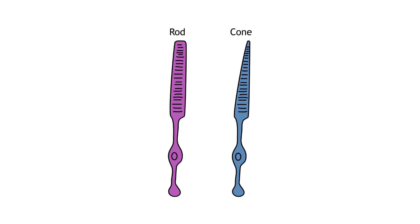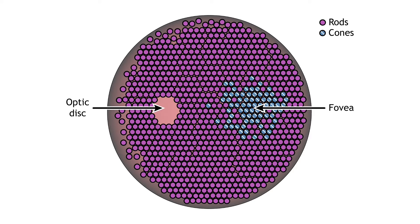The photoreceptors are the specialized receptors that respond to light. There are two types of photoreceptors: rods and cones. Rods are more sensitive to light, making them primarily responsible for vision in low lighting conditions, like at night. Cones are less sensitive to light and are most active in daylight conditions. The cones are also responsible for color vision. The rods and cones are also distributed across the retina in different densities. The cones are primarily found in the fovea, the region of the retina with the highest visual acuity. The remainder of the retina is predominantly rods.